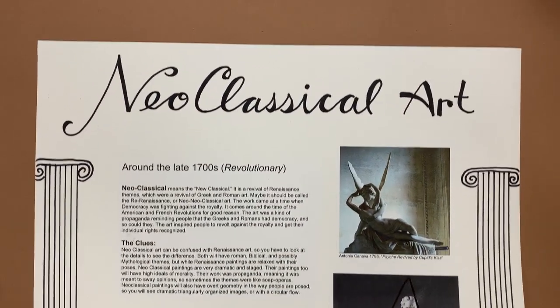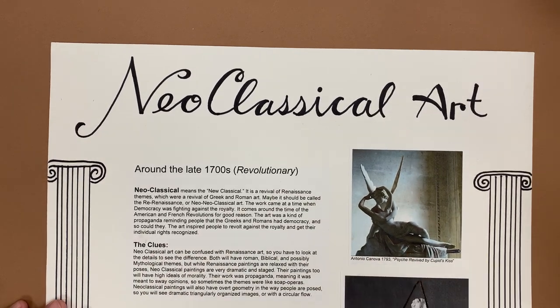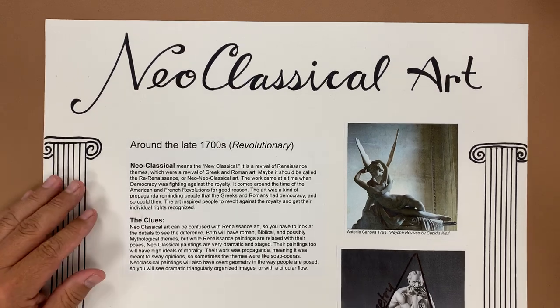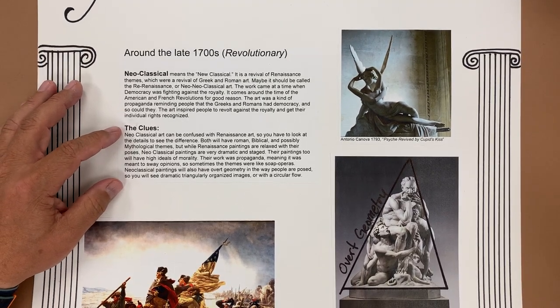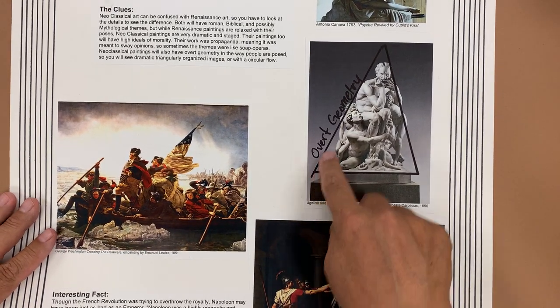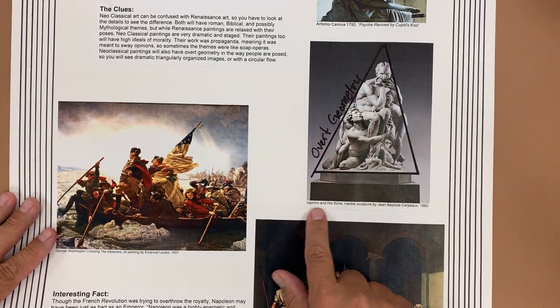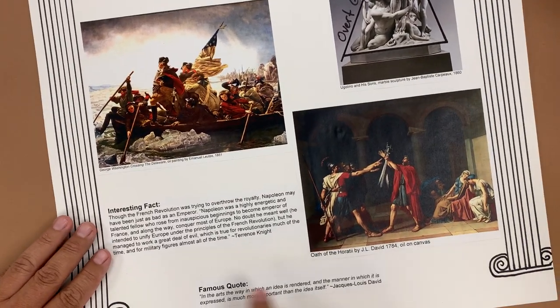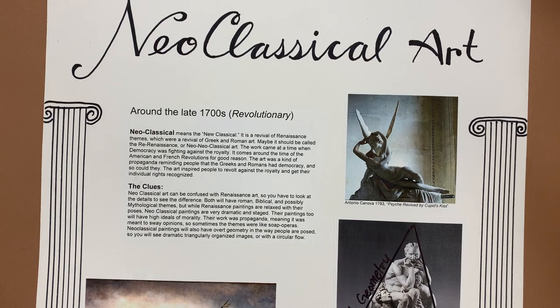The fourth assignment requires some supplies and access, so if you're teaching remotely it might not be available. Students research a particular school of art — this sample covers the neoclassical period. They give it a date, define 'neoclassical,' list clues for identifying neoclassical works, and include four examples of famous neoclassical pieces with labels showing elements like overt geometry. All artwork is labeled, and they include interesting facts about the school of art and a famous quote by one of the artists of that period. Then they decorate it, making it another creative way to do research.